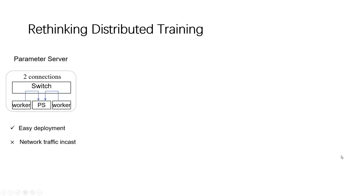To get started, let's first rethink distributed training approaches from the network point of view. In traditional parameter server architecture, all workers push their training gradients to a dedicated server for aggregation, thus resulting in the traffic incast phenomenon.